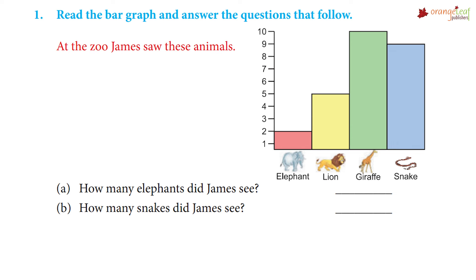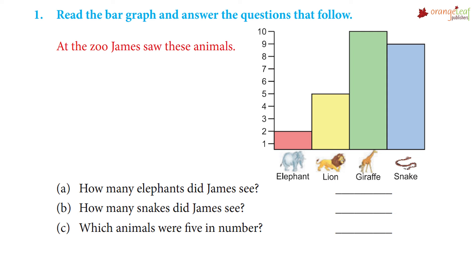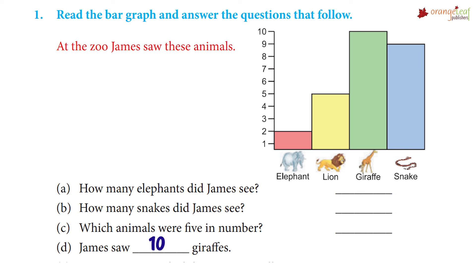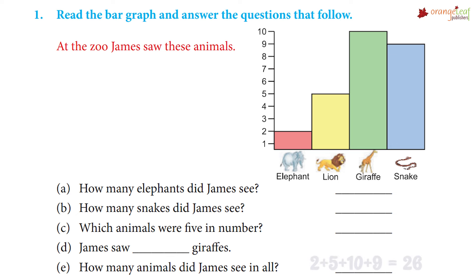How many snakes did James see? He saw nine snakes. Which animal was five in number? The lions were five in number. James saw ten giraffes. How many animals did James see in all? The total number of animals is two plus five plus ten plus nine, which is 26 animals.